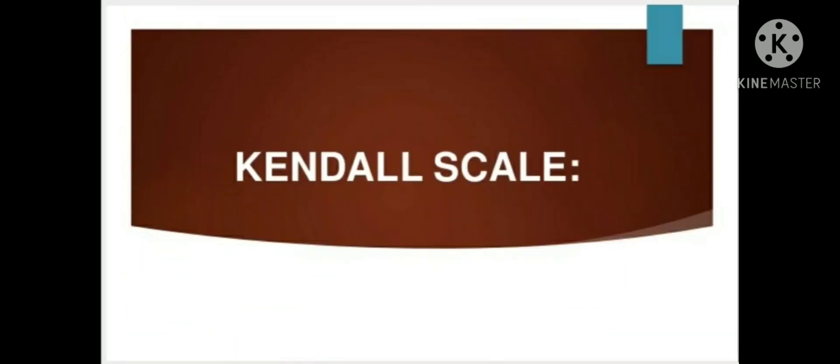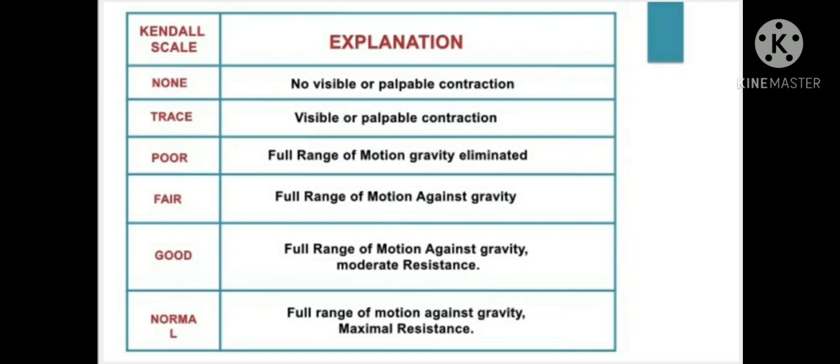In the Kendall scale, the description of grades is similar to the MRC scale, but the MRC scale is based on quantity while the Kendall scale is based on quality. None: no visible or palpable contraction. Trace: visible or palpable contraction. Poor: full range of motion in gravity-eliminated position. Fair: full range of motion against gravity. Good: full range of motion against gravity with moderate resistance. Normal: full range of motion against gravity with maximal resistance.